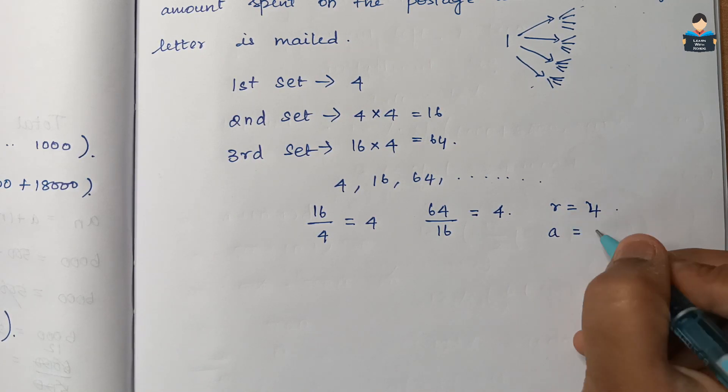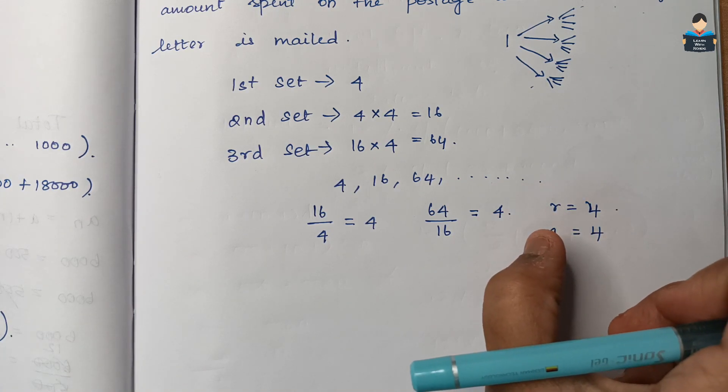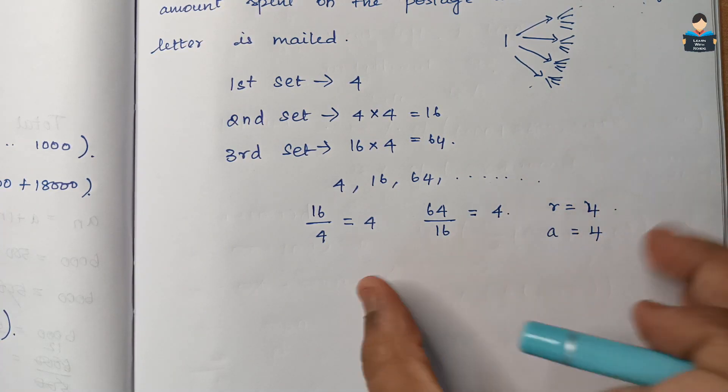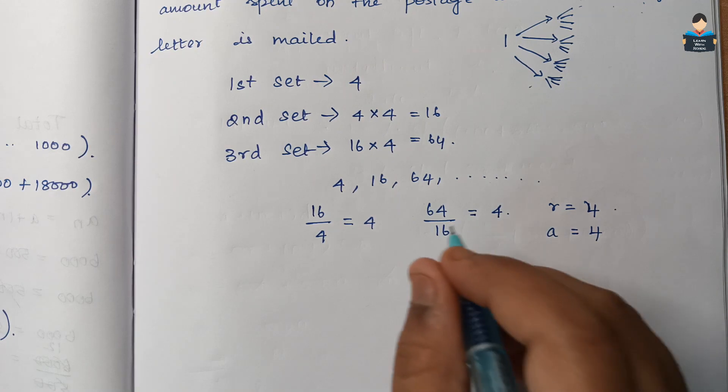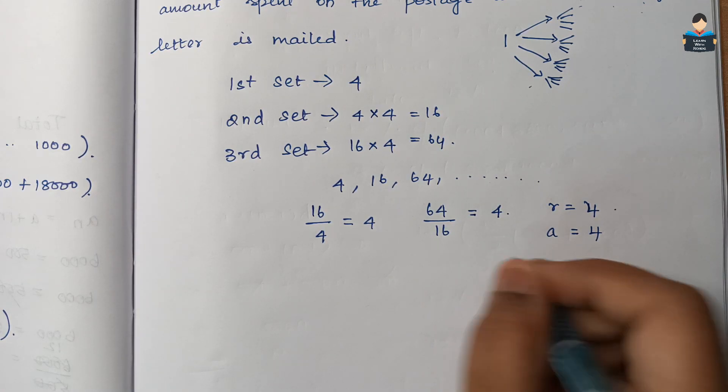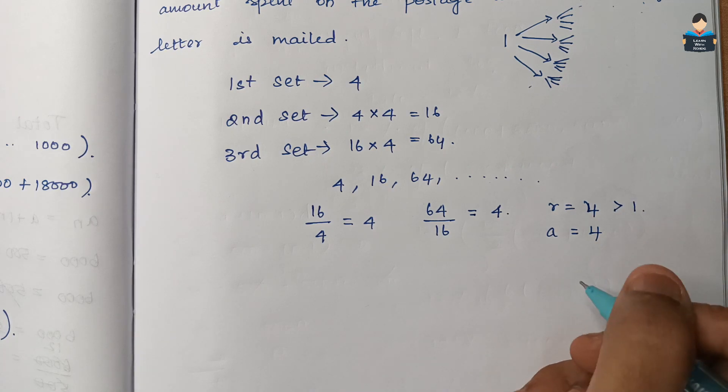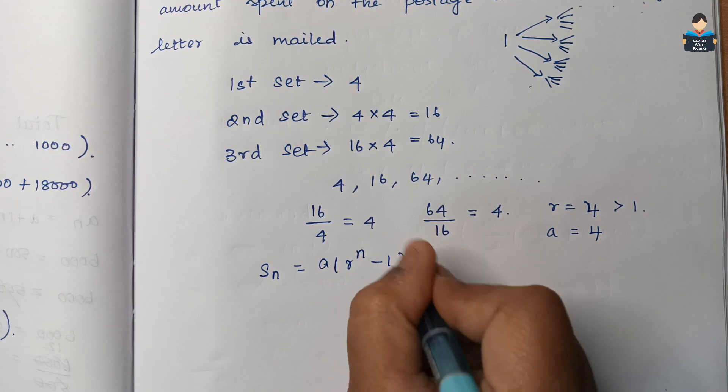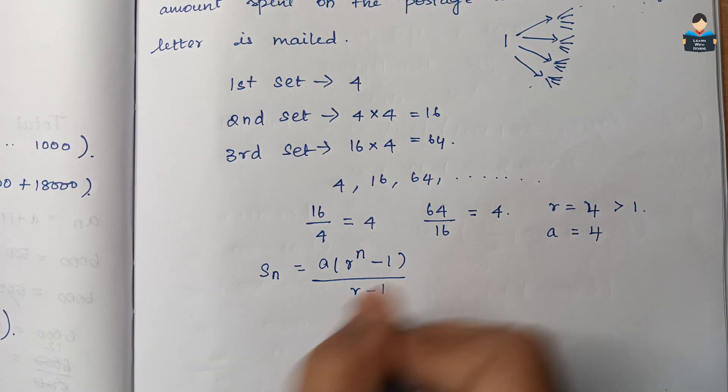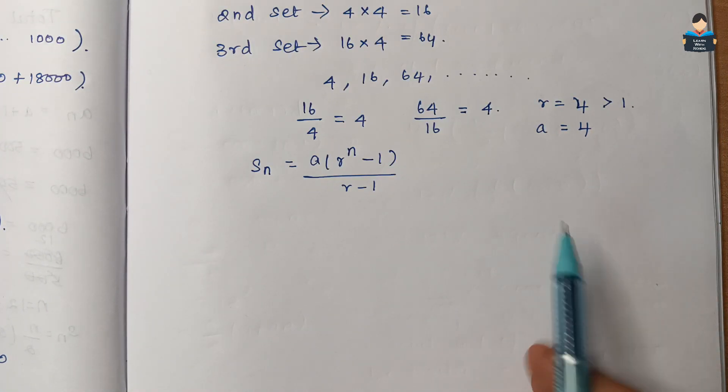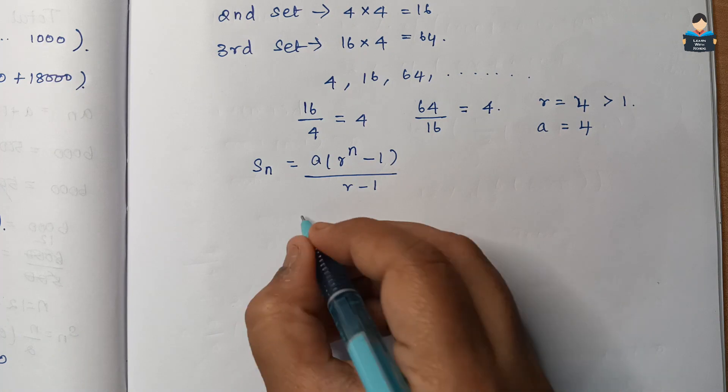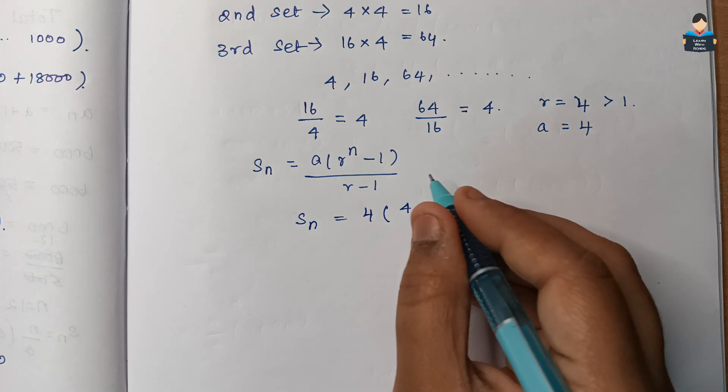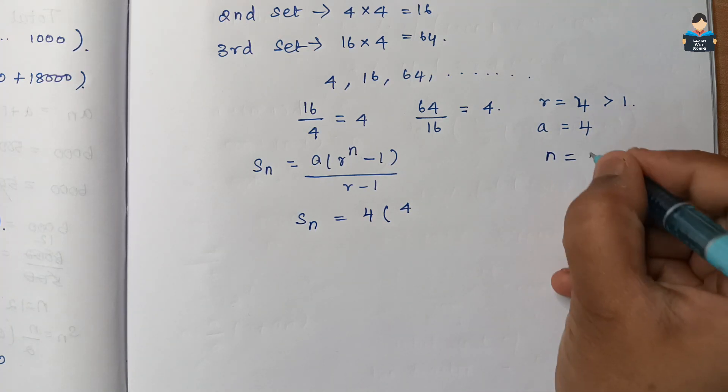We need to find total letters mailed up to 8th set. So use Sn formula. Since R value is greater than 1, apply Sn equals A into R to the power n minus 1 by R minus 1. Substitute values of A and R. Sn equals 4 into 4 to the power 8 minus 1 by 4 minus 1.